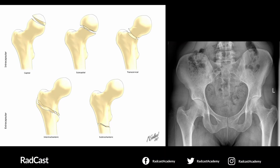Generally speaking, intracapsular fractures will disrupt the blood supply from the lateral circumflex artery to the femoral head. Because of this, intracapsular fractures often result in avascular necrosis where the femoral head is unlikely to heal, so patients will usually require a hip replacement where the femoral head is replaced with a synthetic material. Extracapsular fractures don't usually cause avascular necrosis as the blood supply from the lateral circumflex artery usually remains intact, meaning the bone can heal — so the hip isn't replaced but it does need to be fixed, for example using a dynamic hip screw.